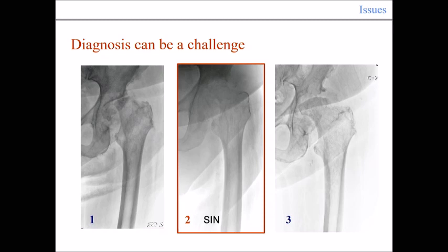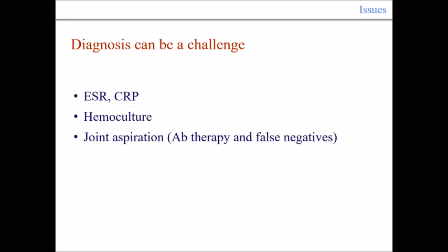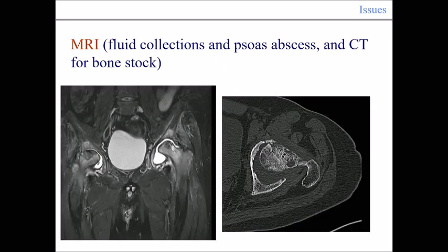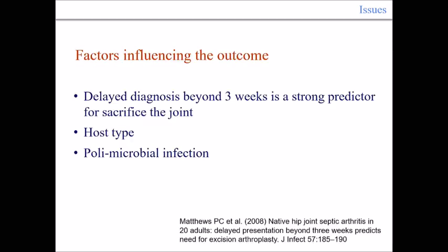The infected case is number two. The other two are rapidly destructive osteoarthritis of the hip, but they are not infected. To rule out infection in these cases, you need ESR and CRP, which is part of our routine in all total joint replacement. Blood cultures can be useful since these patients can have fever peaks. Joint aspiration may be negative because many patients are already on antibiotic therapy — producing false negatives. MRI can help by identifying fluid collections and abscess recognition. CT scan is helpful for assessing bone defects prior to surgical reconstruction.